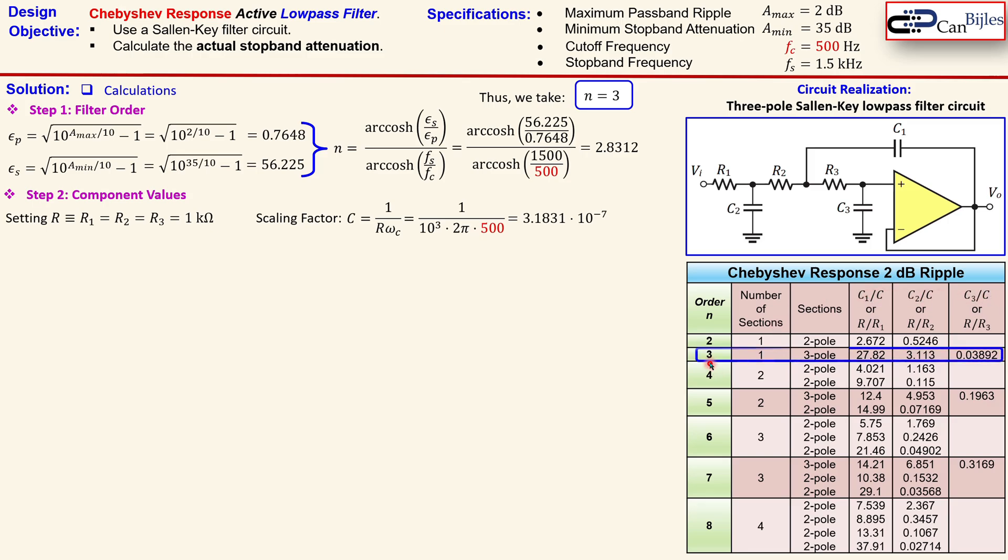So in our case, we need to have a third order, that means this row. And looking at this ratio, we need to have a C1 over C, which is our scaling factor. That C is the same C, which should be 27.82. The next one will be 3.113 and the final one will be 0.03892.